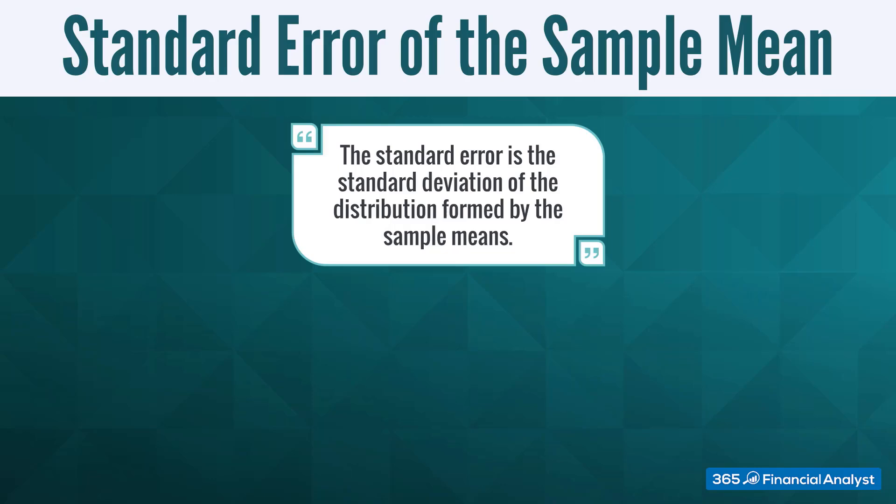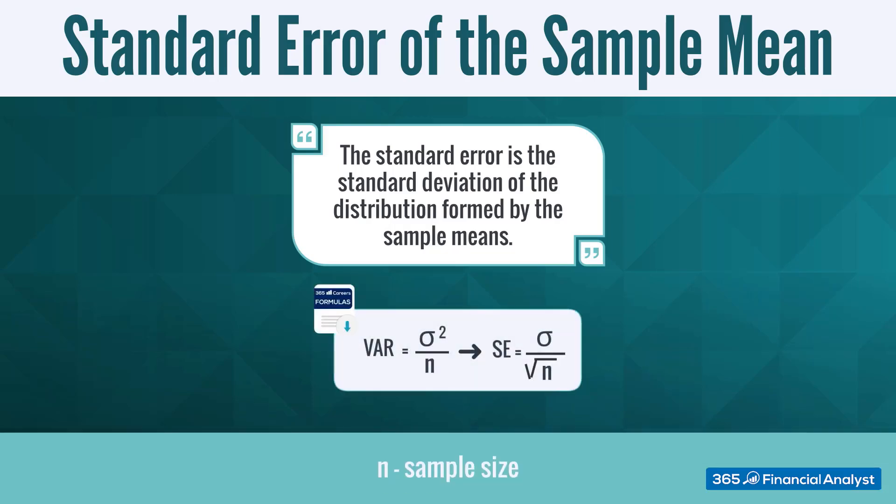So how do we find the standard error? We know its variance, sigma squared divided by n. Therefore, the standard deviation is sigma divided by the square root of n.